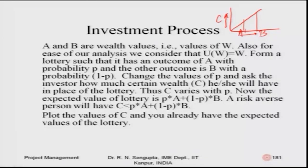Form a lottery such that the outcome is A with probability P. You can simplify by considering fifty-fifty probabilities. A has probability P and the other outcome B has probability one minus P, since the sum of probabilities must equal one. By changing the values of P, or by fixing P and changing the values of A and B, we ask the investor how much certain wealth they will accept in place of the lottery.